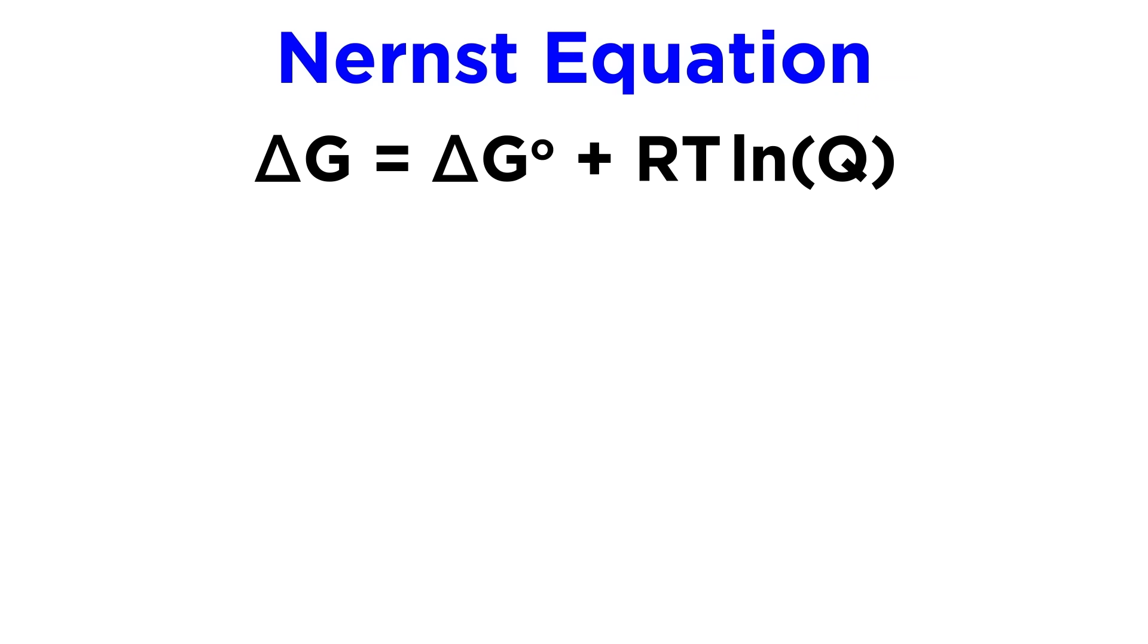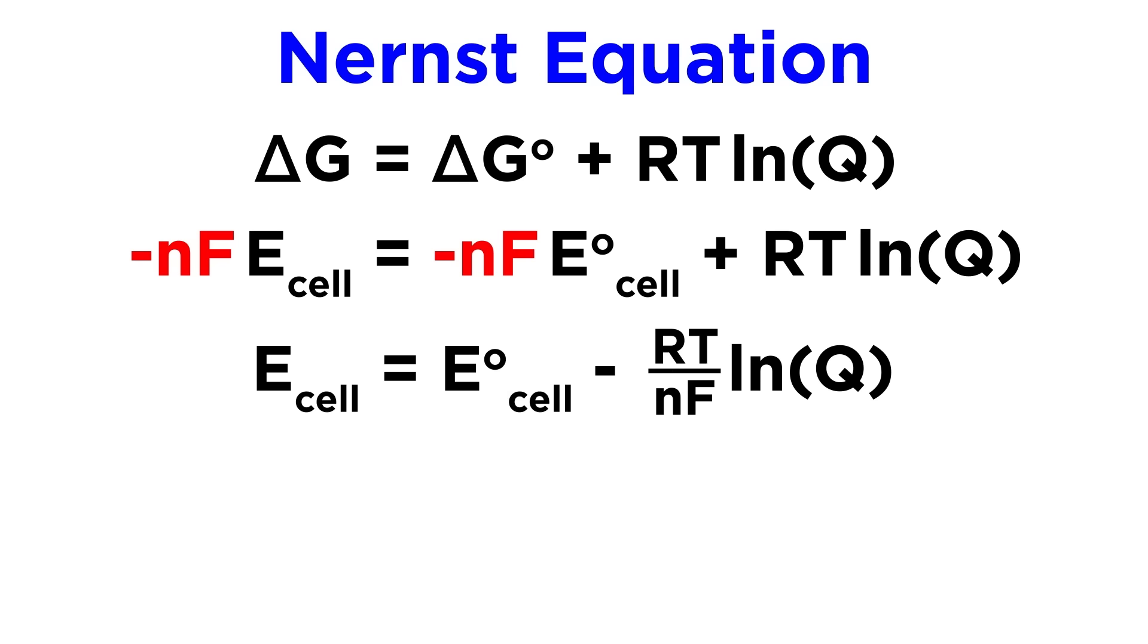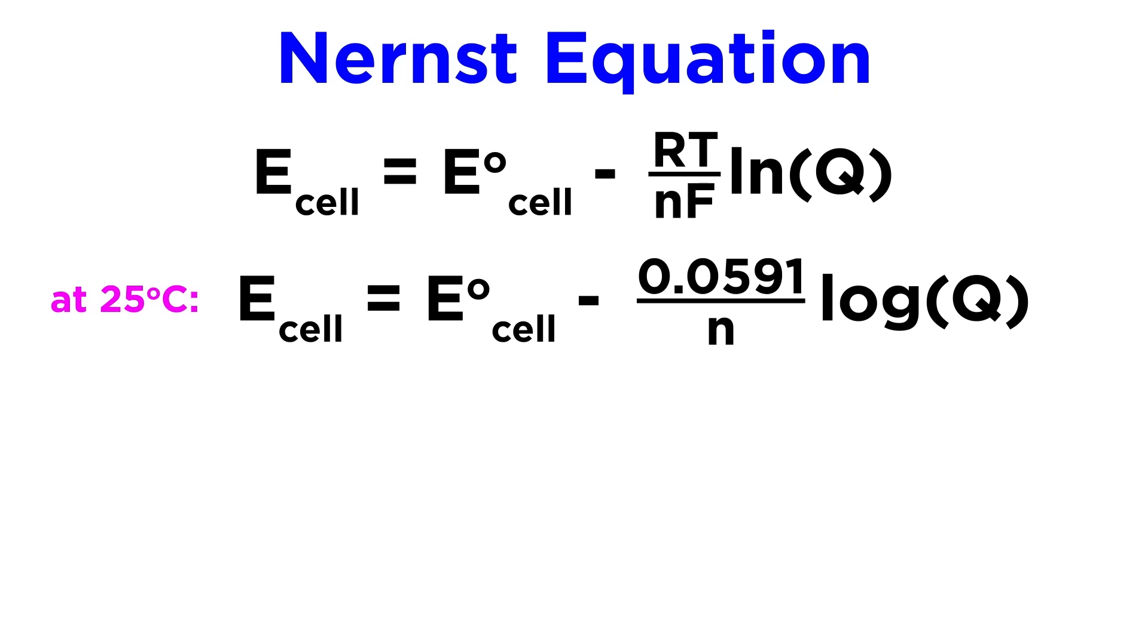To derive this, we will start with a familiar equation relating free energy change, standard free energy change, and reaction quotient. We know that these delta G terms can be expressed as negative N times F times cell potential, so let's make that replacement for each term. Then let's divide both sides by negative NF, and we get the Nernst equation. We will often use a simplified version of this at room temperature, which uses a base-10 log instead of a natural log.